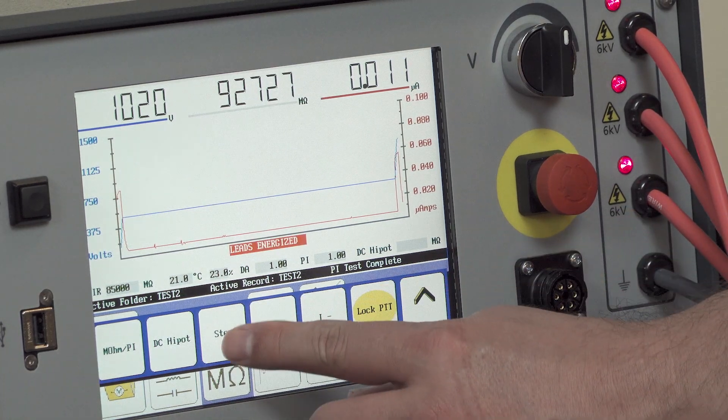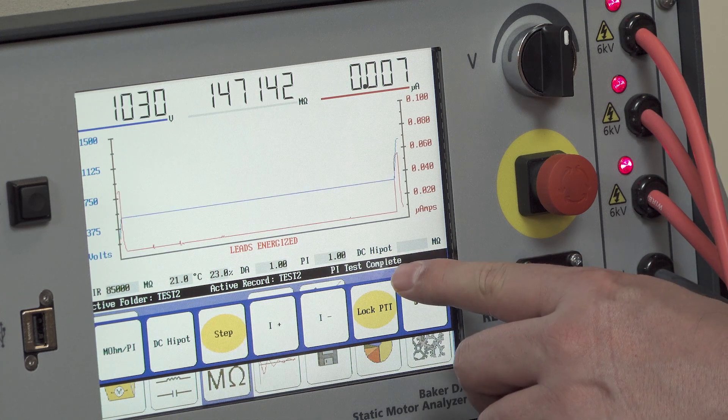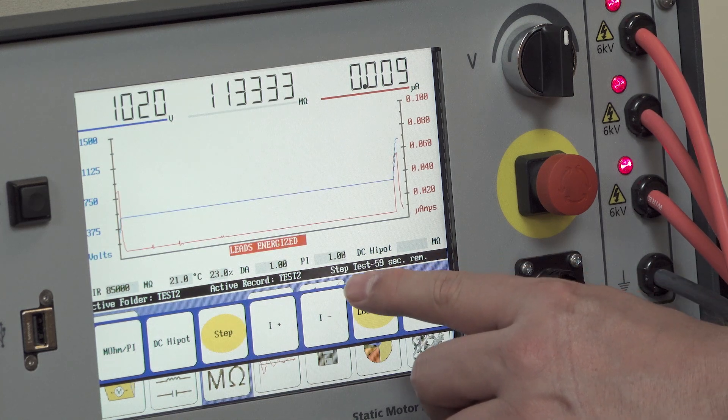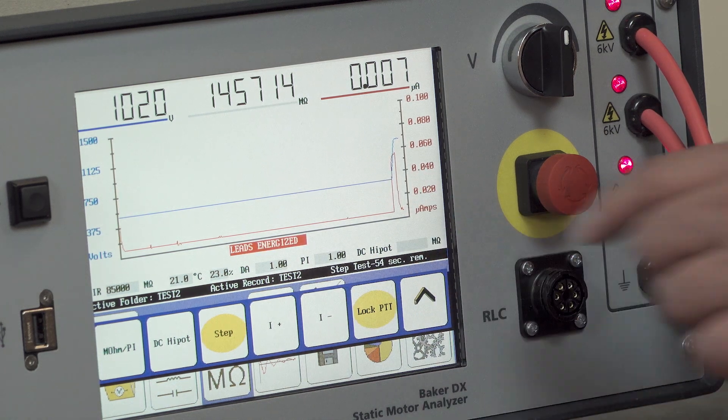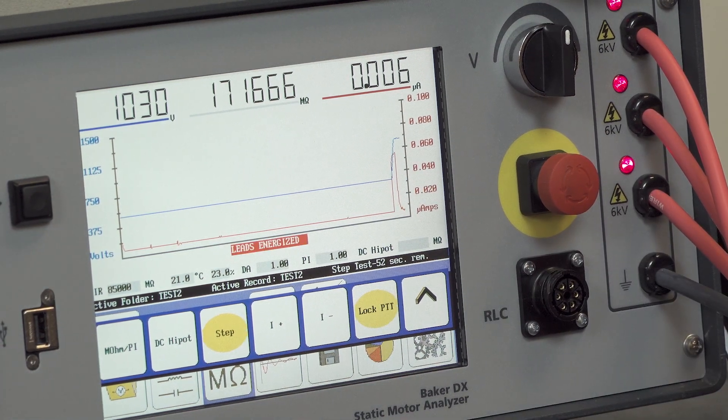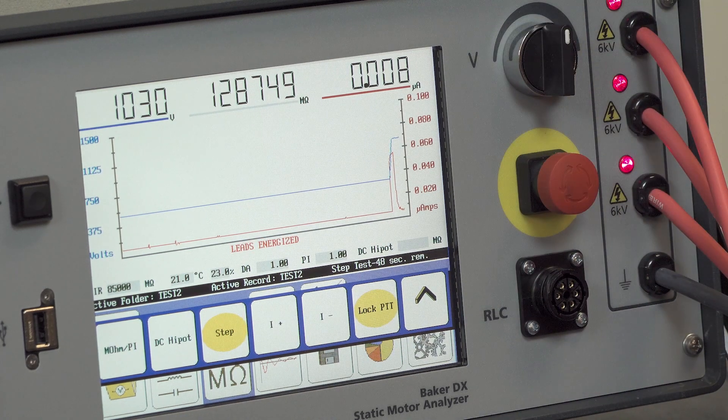So having achieved a thousand volts, in this case I'm doing a step voltage high pot, so I'm going to select step. That's going to start my step timer. On the right-hand side here now it says step test 57 seconds and counting as it's going to count down to zero and that step is complete. Then I'll proceed to the next step which would be 1500 volts.